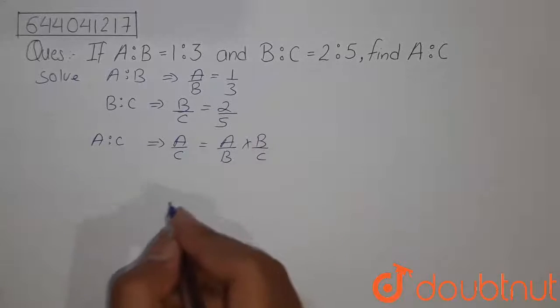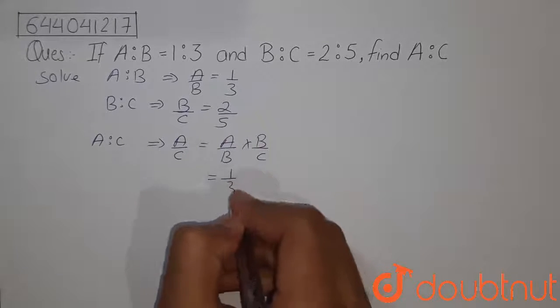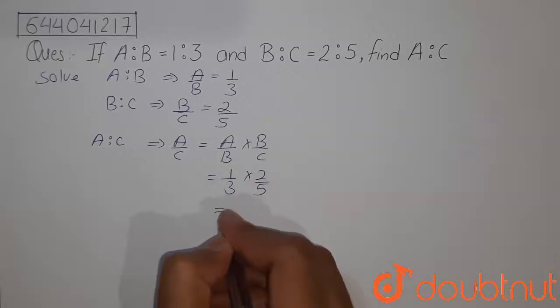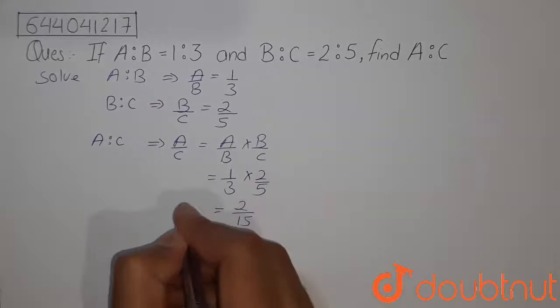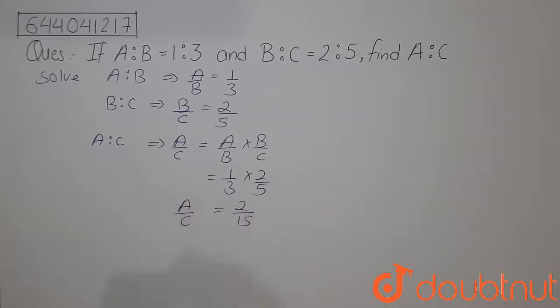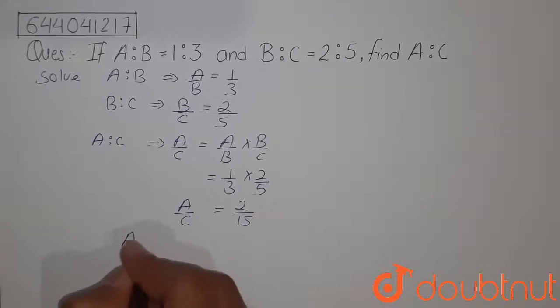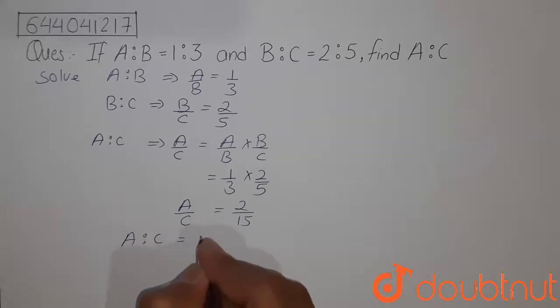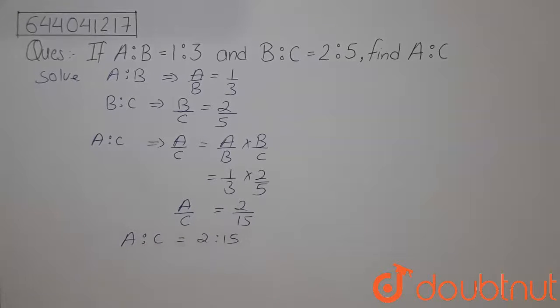We can put their values, that is 1 by 3 into 2 by 5. That is 2 upon 15. A by C is equals to 2 upon 15. That means A ratio C equals to 2 ratio 15. This is our answer.